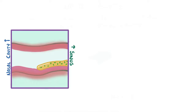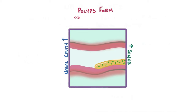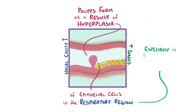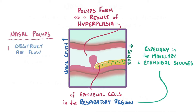As a quick recap: nasal polyps form as a result of hyperplasia of the epithelial cells that line the respiratory region, especially in the maxillary and ethmoidal sinuses. Their growth obstructs airflow through the nasal cavity and prevents sinus mucus from draining normally. They're treated with steroids or sometimes surgery, but have a high likelihood of coming back.